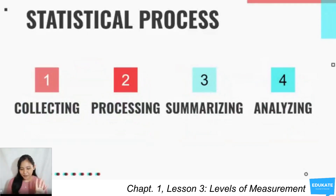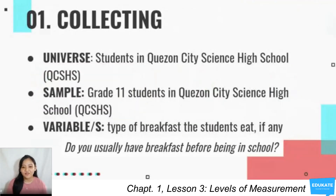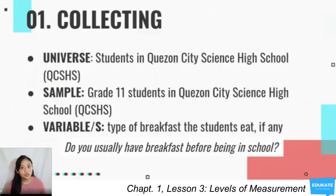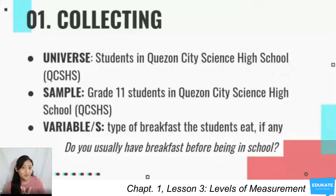We are now going to apply the four-step statistical process: collecting, processing, summarizing, and analyzing data. For the first step, collecting, let's first identify our universe. Let's say that our universe is the students in Quezon City Science High School, and our sample is the Grade 11 students. As mentioned in our lesson on basic terms in statistics, population is a set of all possible values of a variable. The variable we have is the type of breakfast students eat, so our population can be healthy, unhealthy, or nothing at all.